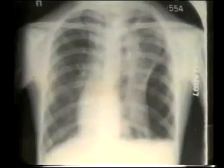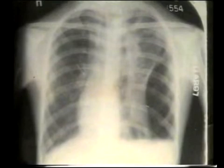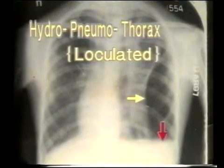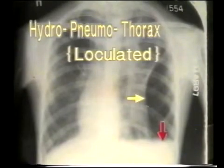Compare it with this x-ray of loculated hydropneumothorax. Note the lung border shown by the yellow arrow, which is not fibrosed. On aspiration, clear fluid and air were aspirated.